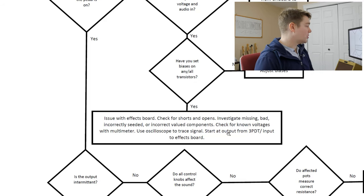You also want to check for known voltages with a multimeter. If you look on forums, you can find that someone has gone through similar issues and posted the voltages on the base, collector, and emitter of a transistor and what they should be — a great place to check is tag board effects. Lastly, you can use an oscilloscope to trace your signal. I put in a test signal — just a square wave — to the input of my effects board or input jack, then trace the signal starting at the output of my three-pole double throw, which is also the input to my effects board, and trace to see where the signal is lost.